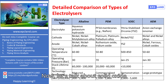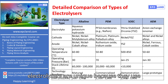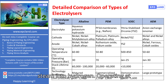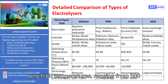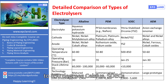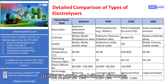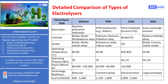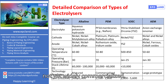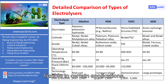Now, let's talk about solid oxide electrolysis cells, or SOEC electrolyzers. These electrolyzers are unique because they use heat, typically from sources like nuclear or industrial facilities, to convert steam into hydrogen. Operating at very high temperatures ranging from 500 to 850 degrees Celsius, SOECs are the most efficient of all the electrolyzer types. They utilize a yttria-stabilized zirconia electrolyte. Despite their high efficiency, SOECs are still in the demonstration phase and are not yet widely commercialized. Additionally, they are not well suited to handle load changes, making them less flexible in certain applications.